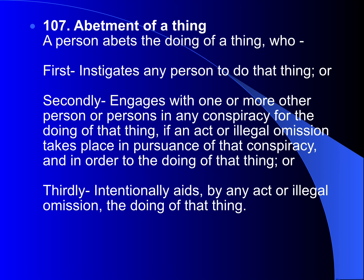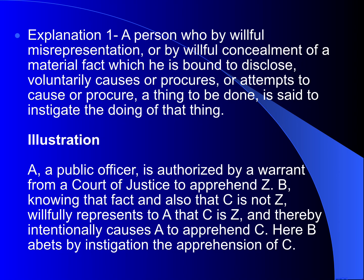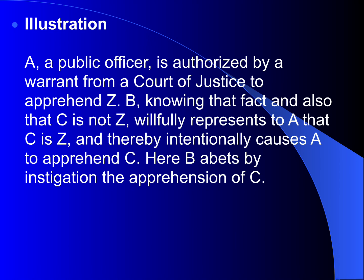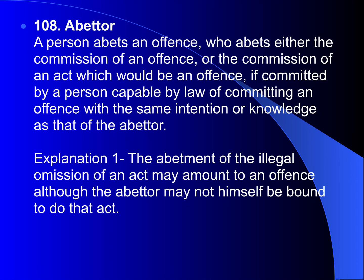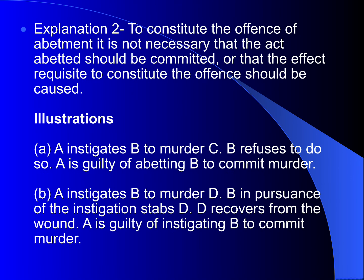Abetment of a thing: a person abets the doing of a thing who firstly instigates any person to do that thing, or engages with one or more other persons in any conspiracy for the doing of that thing if an act or illegal omission takes place in pursuance of that conspiracy and in order to the doing of that thing, or thirdly intentionally aids by an act or illegal omission the doing of that thing — along with the explanations and illustrations as explained earlier.